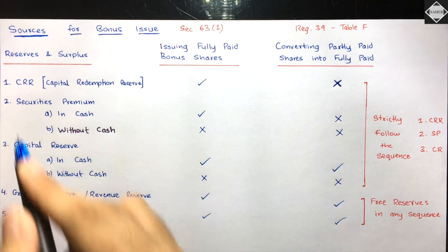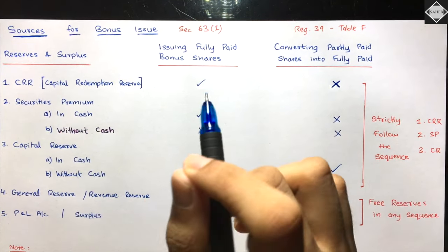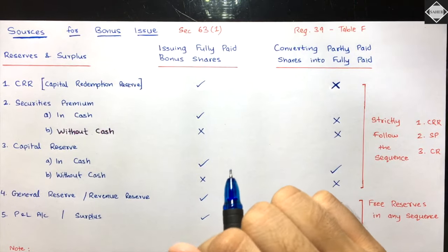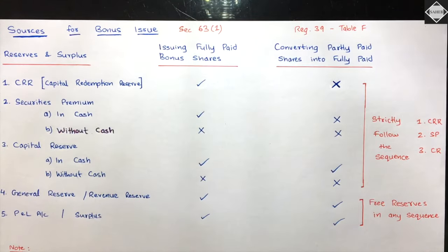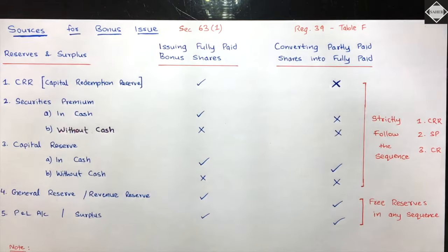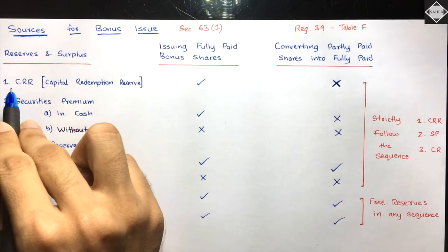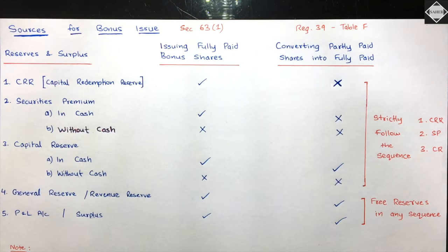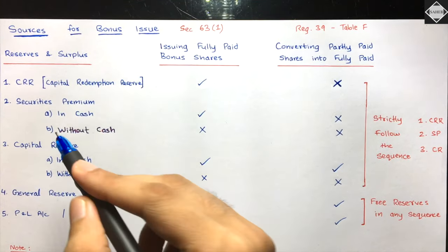Free reserves, as per the Companies Act, are reserves available for distribution as dividend - for example, general reserve, profit and loss, dividend equalization fund, investment fluctuation fund after adjustment, and workman compensation reserve after adjustment of liabilities. CRR is a reserve created for replacement of capital - you'll learn more about it in Section 55 in the redemption of preference shares chapter.